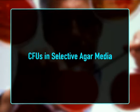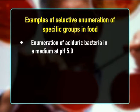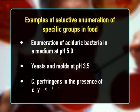CFU in selective agar media: a medium can be supplemented with one or more selective or inhibitory agents. Only microorganisms resistant to the agent can grow. Examples include: enumeration of aciduric bacteria at pH 5; yeasts and molds at pH 3.5; C. perfringens in the presence of cycloserine. Halophilic bacteria can also be enumerated by specific selective procedures.